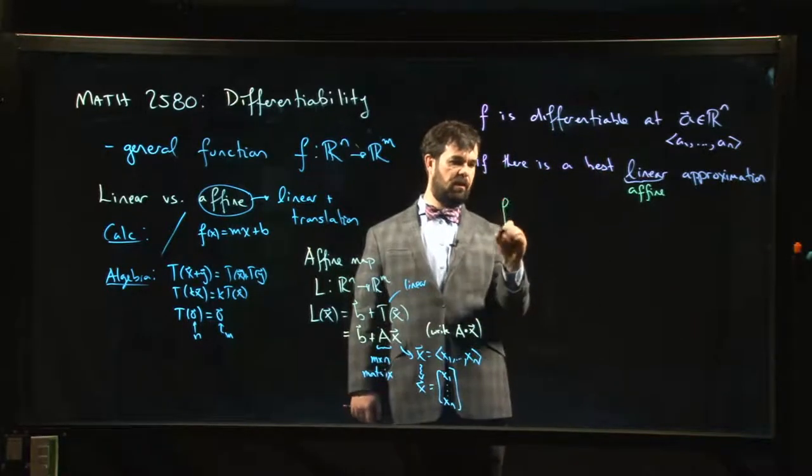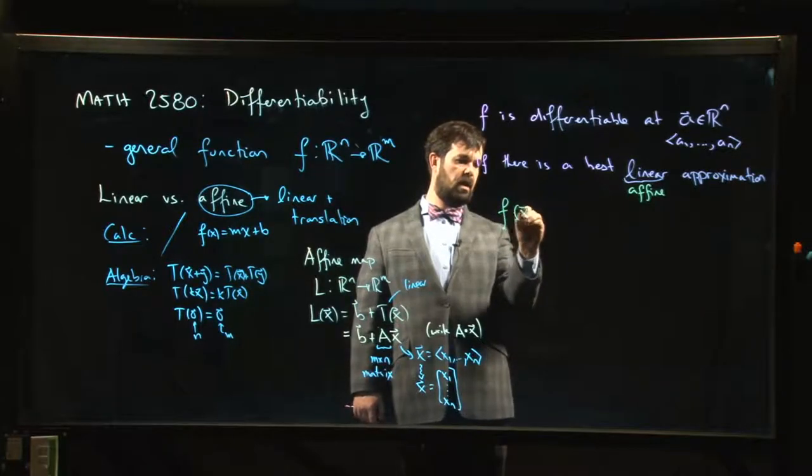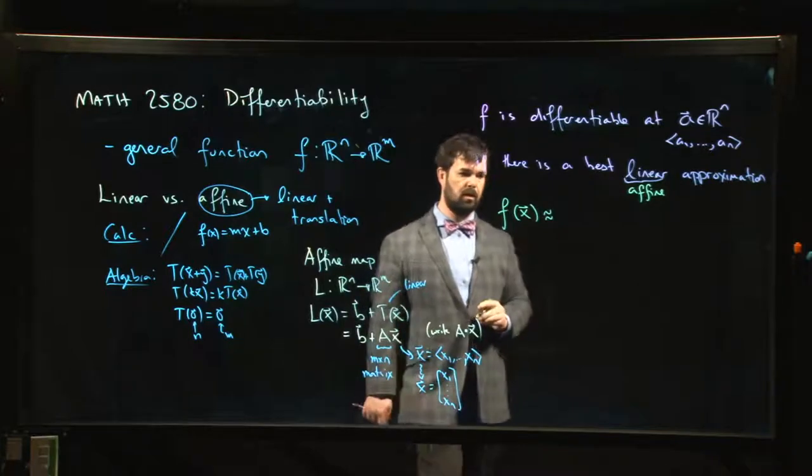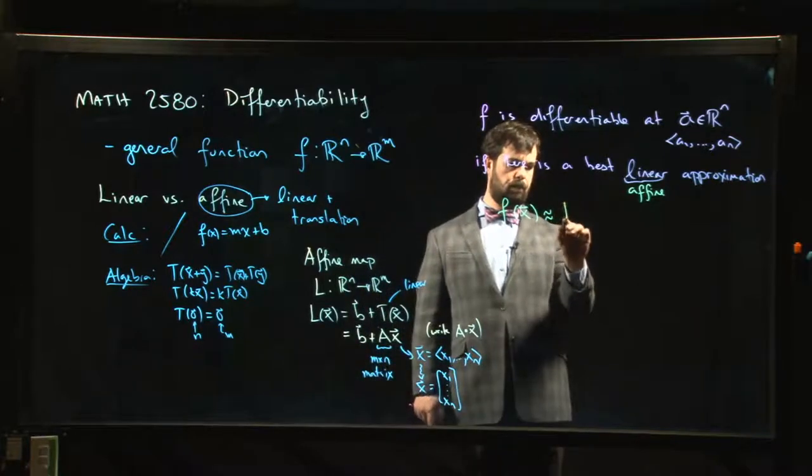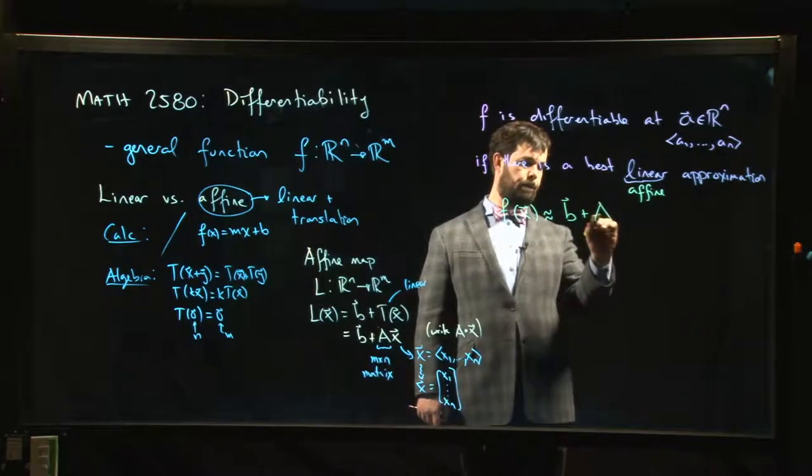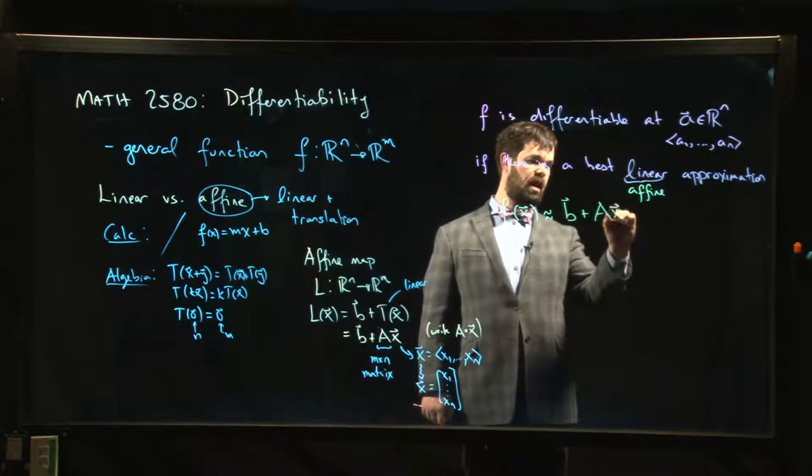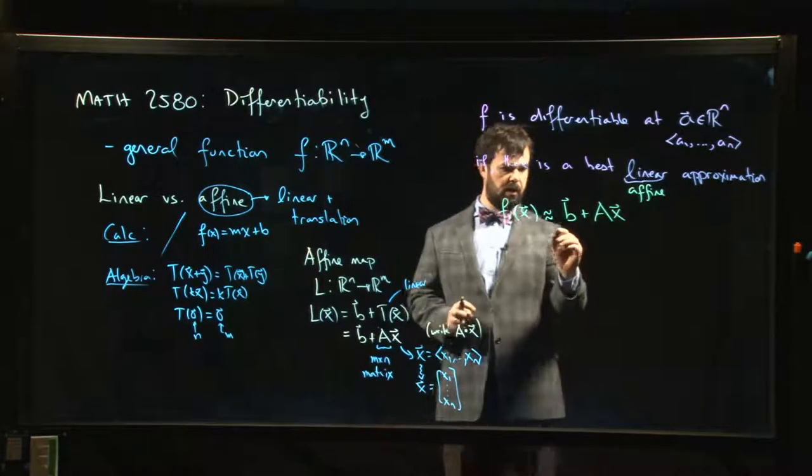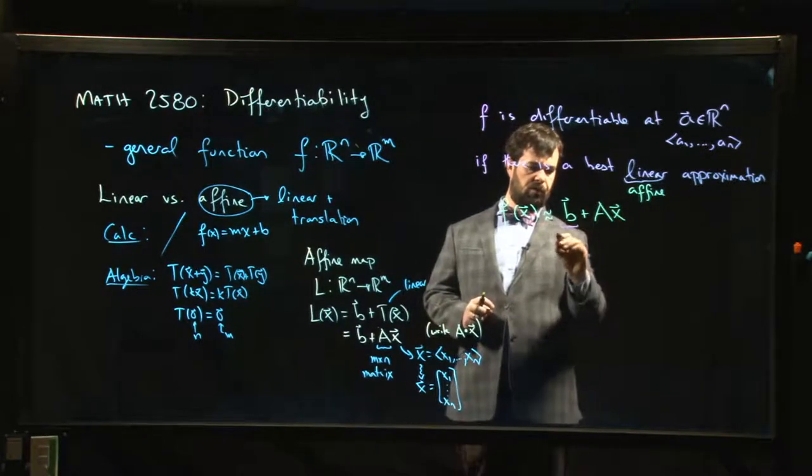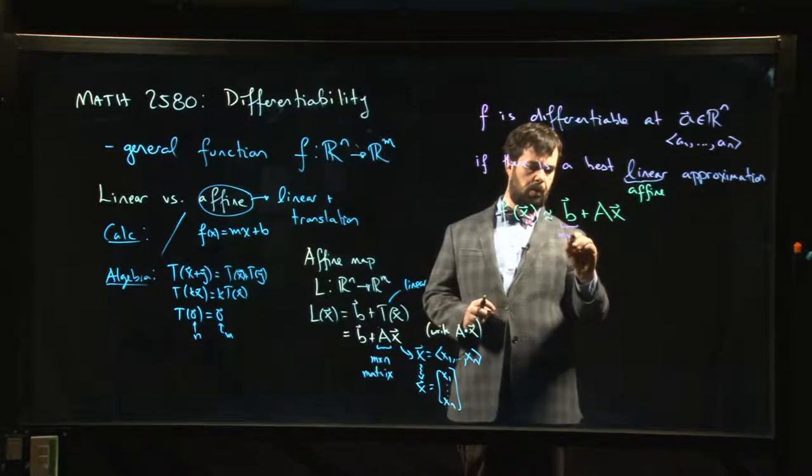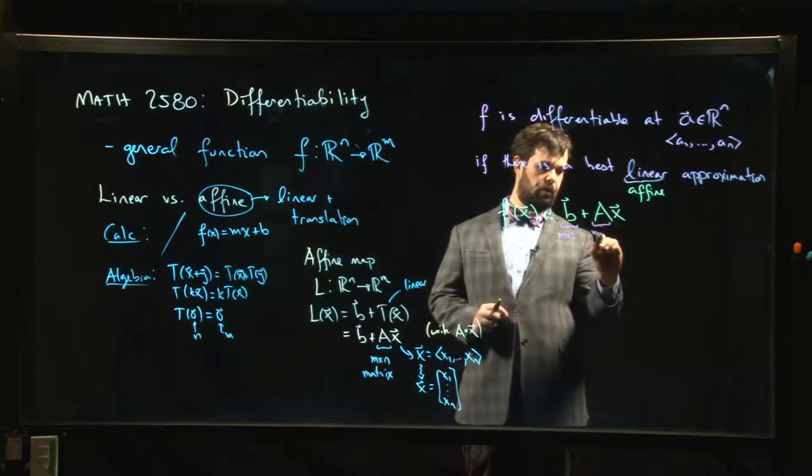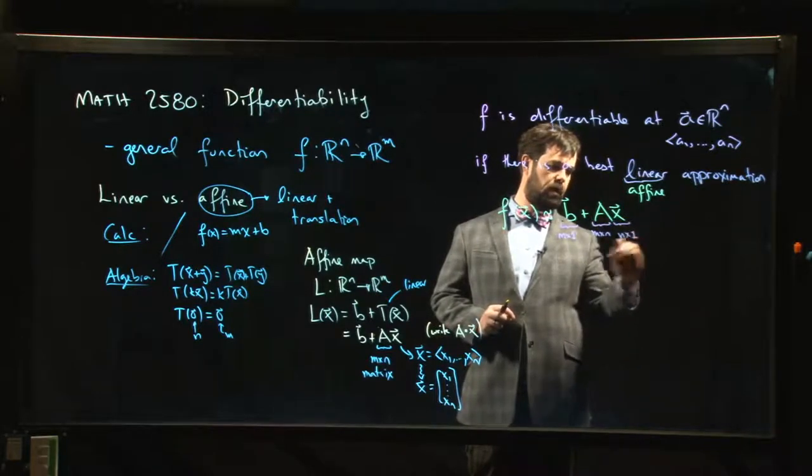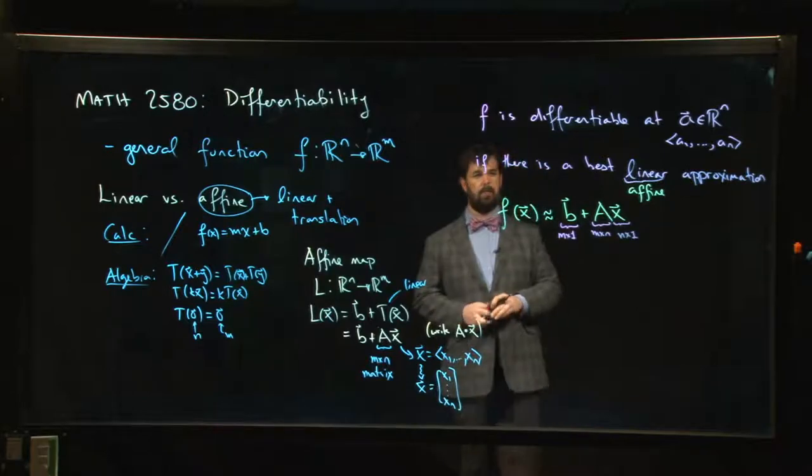So it should mean that f at x should be approximated by something that looks like b + Ax, where A is a matrix. So b is an m by one column vector, A is m by n, x is n by one. So the sizes all work out.